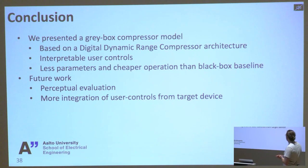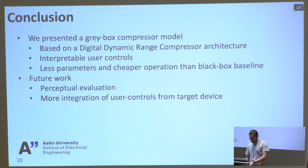In conclusion, we've presented a gray box model of a compressor based on a classic digital dynamic range compressor architecture. It has very interpretable user controls and uses much less parameters and is cheaper to run than a black box baseline. For future work, perceptual evaluation would be important. It's not that easy to assess how accurate the model is in that term. Maybe more integration of user controls as we only had one in this case. Thank you.